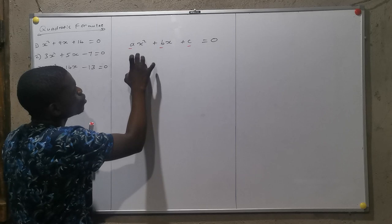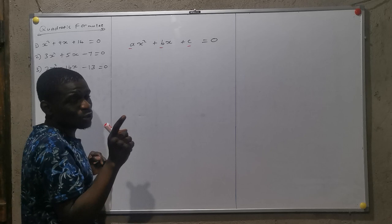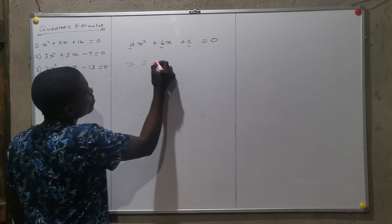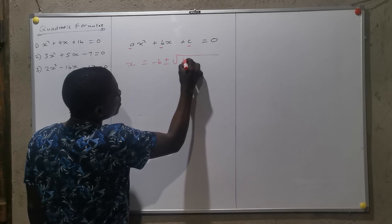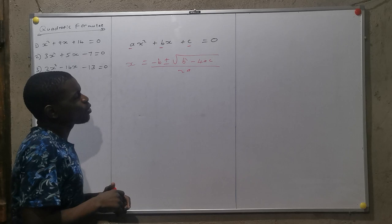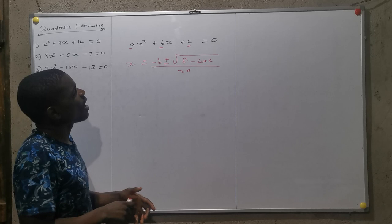Now, we have to solve a quadratic equation using the quadratic formula. So the formula is: X is equals to minus B plus or minus the square root of B squared minus 4AC, all over 2A. This is the quadratic formula that we are going to use to solve a quadratic equation.